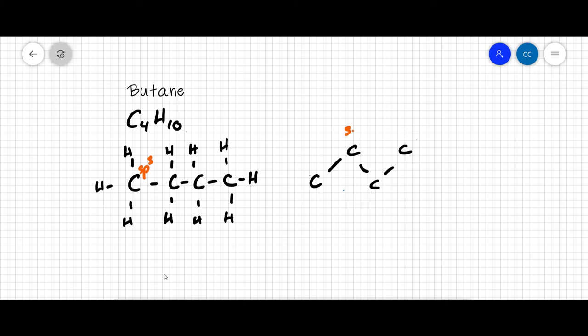We've said each of these carbons is sp3 hybridized and has a bond angle of 109.5 degrees. Each of these bonds is also a sigma bond. The sp3 hybridized orbitals are overlapping end to end.